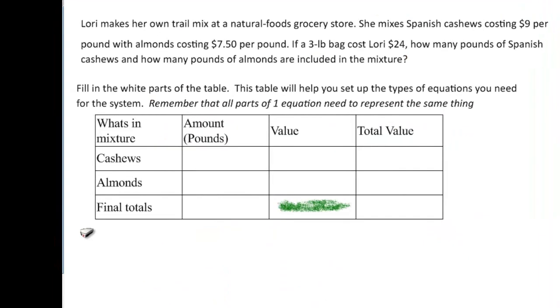So let's look at another example. Lori makes her own trail mix at a natural foods grocery store. She mixes Spanish cashews costing $9 per pound and almonds costing $7.50 per pound. If a three-pound bag costs Lori $24, how many pounds of Spanish cashews and how many pounds of almonds are included in the mixture?